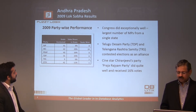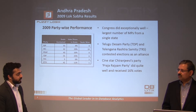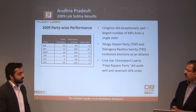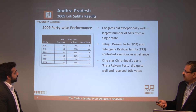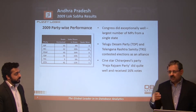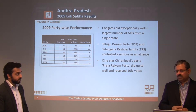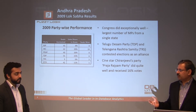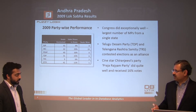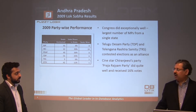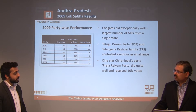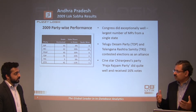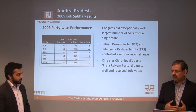Also, the TDP and the TRS were in an alliance in 2009. The TDP actually left nine seats for the TRS, and these nine seats were primarily in the Telangana region. They did not contest all seats in the Telangana region, leaving nine seats for the Telangana Rashtriya Samithi party headed by Chandrasekhar Rao. Congress was really dominant in Andhra Pradesh at that time.